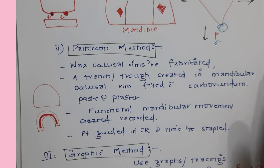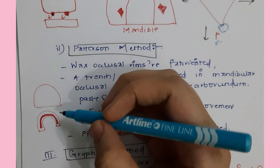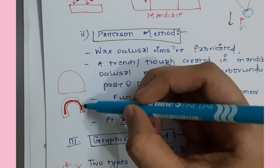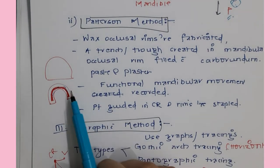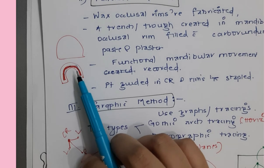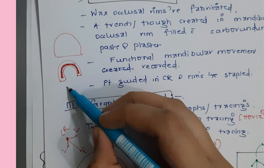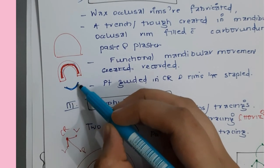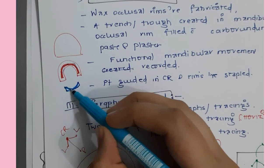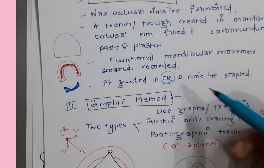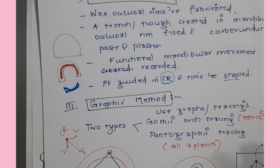In the Patterson method, when fabricating wax occlusal rims, a ditch or trough is created on the mandibular occlusal rim. This trough is filled with paste or plaster. The patient carries out various mandibular movements, and an advantage is that compensatory curves are also recorded. The patient is guided in centric relation and the occlusal rims are stapled.